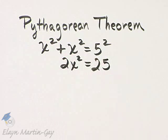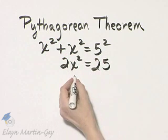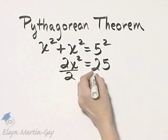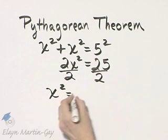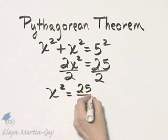Let's go ahead and isolate x squared. To do that, I would divide both sides by 2. I'll have that x squared is equal to 25 over 2.